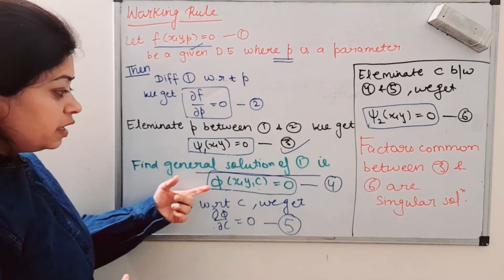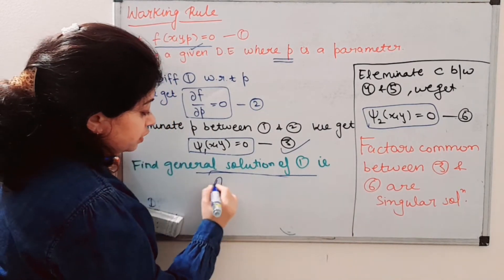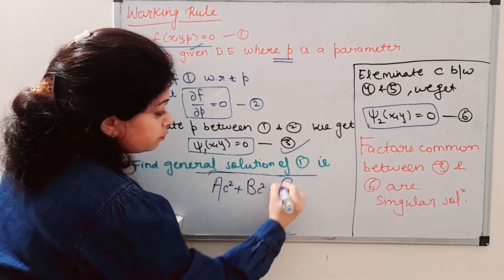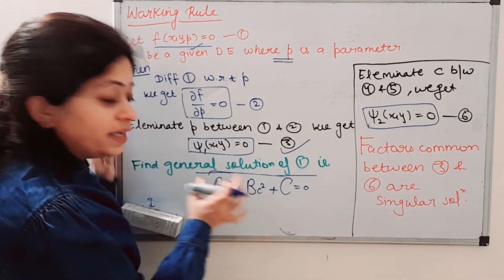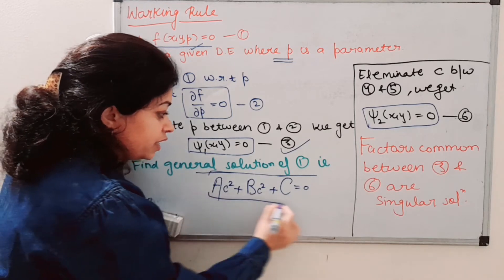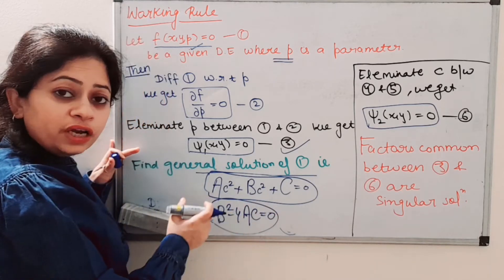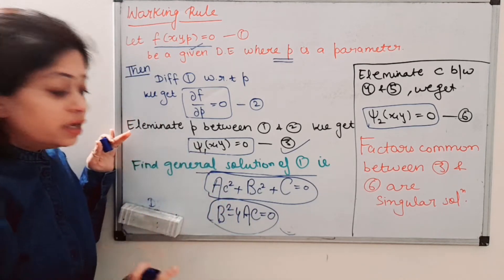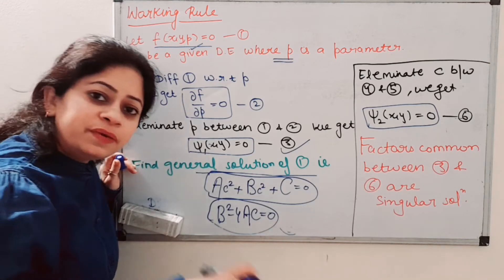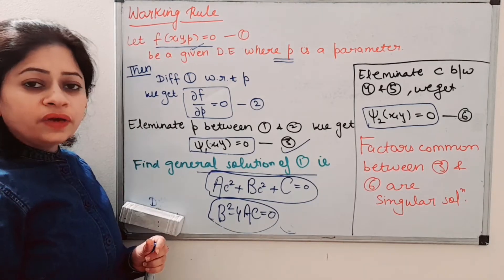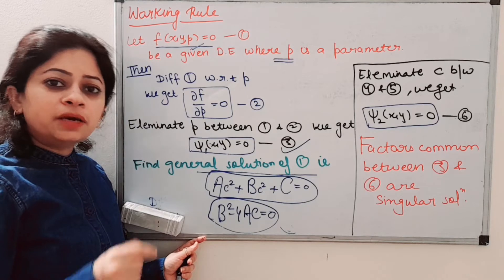In some cases, when you find the general solution, you get a quadratic equation like Ac² + Bc + C = 0 (where A, B, C are coefficients and c is the variable). Then the discriminant B² − 4AC = 0 will give the solution. If you get a quadratic equation, you need to calculate its discriminant. Then you find what is common between the two results — that will be the singular solution. Now we come to examples, and now I hope you have understood the method of finding the singular solution.